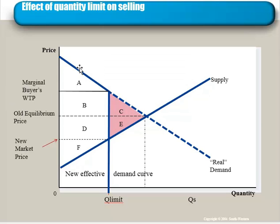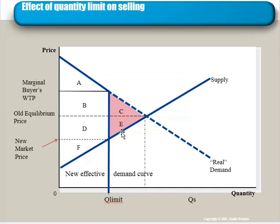The real demand curve, based upon people's fundamental willingness to pay, would keep going out. But because we're limiting the amount that people can demand to a certain level, the demand curve turns due south at that limit. We get a new equilibrium market price down here, where the effective demand curve intersects the supply curve. Certain transactions — between the quantity limit and the original equilibrium quantity — no longer happen, so the gains from trade that would have been created by those transactions no longer occur. We have deadweight loss C and E.